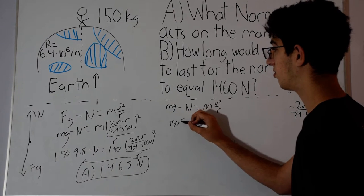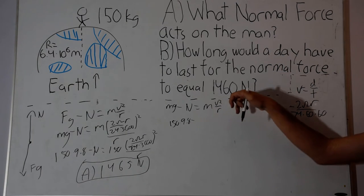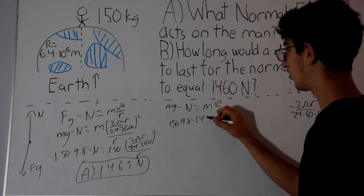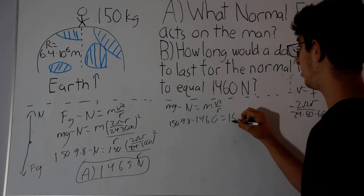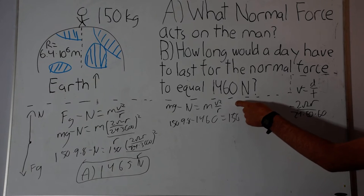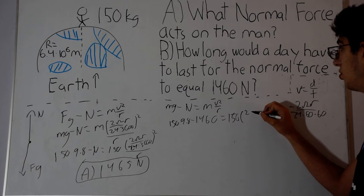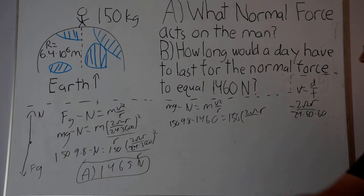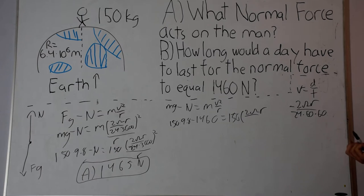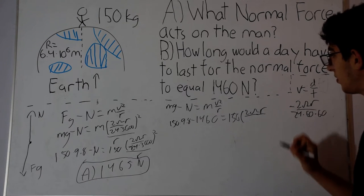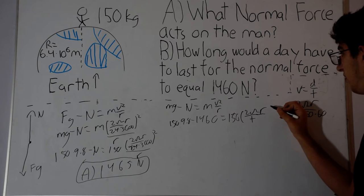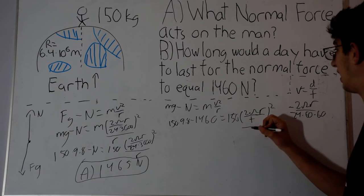That's 150 times 9.8 minus the normal force, which we're given in the question, 1460, is equal to 150 times v squared, which is distance divided by time. And now we don't know what time is. It's not going to be just one day because we're trying to change the length of a day. So time is now a variable. So 2πR, again I'm writing R instead of 6.4 times 10 to the 6 but it's just a value, it's not a variable, over time which is a variable that we're trying to solve for, all that over R.